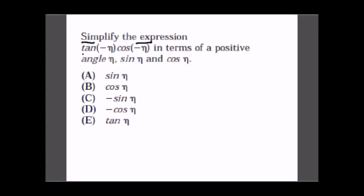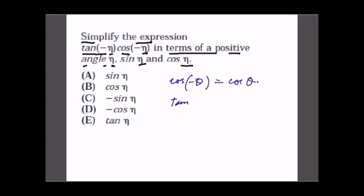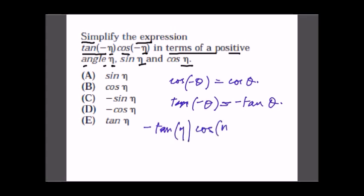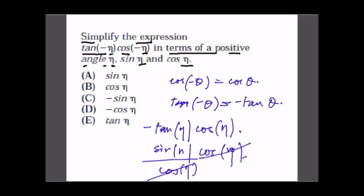Simplify tan(−θ) in terms of sine and cosine with positive angles. We know cos(−θ) = cos θ and tan(−θ) = −tan θ. Since tan θ = sin θ / cos θ, we get tan(−θ) = −sin θ / cos θ. After simplification, the answer is −sin θ, which is option C.